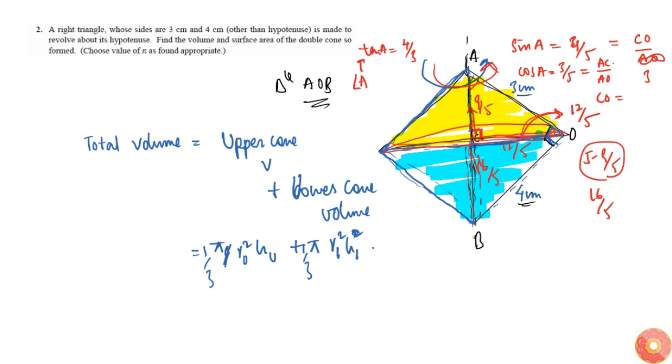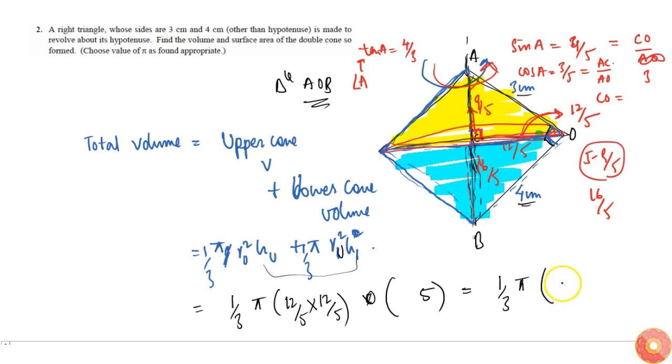So this I'll get 1 by 3 into pi into r upper square is 12 by 5 into 12 by 5. R upper is equal to r lower, so these both are same. We can take r square common. I'll just add h1 plus h2, which is simply 5. So this is 1 by 3 into pi into 12 by 5 square is 144 by 25. Here this is 22 by 7 into 5.